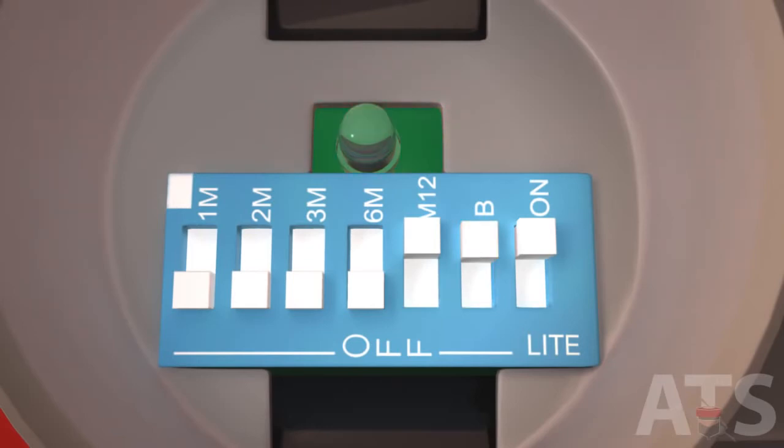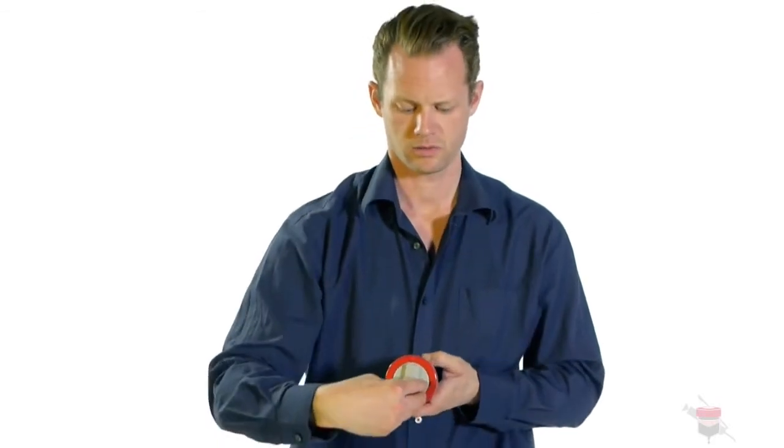If this light flashes red once every 20 seconds, this unit is fully operational. Screw back the protective cover clockwise and place the weather cap over the protective cover.